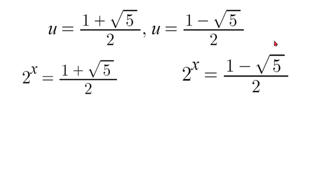Now this option right here is not possible to solve because we are going to get a negative value. 1 minus square root of 5 is going to give this fraction a negative value. And no value for x would make 2 negative. Exponent properties, it's not possible. So in that case this is not an answer. So our only option is the positive.